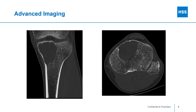Advanced imaging is then obtained in the form of CT or an MRI to better delineate the mass. Here you can see that the mass extends just up to the surface of the knee joint and the tibia along the medial cortex as well as along the anterior cortex, which has a small fracture in it, likely from lack of stability since the tumor has replaced the underlying bone structure.